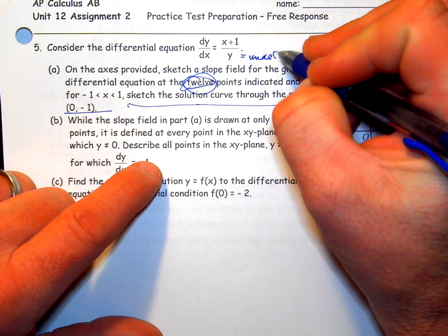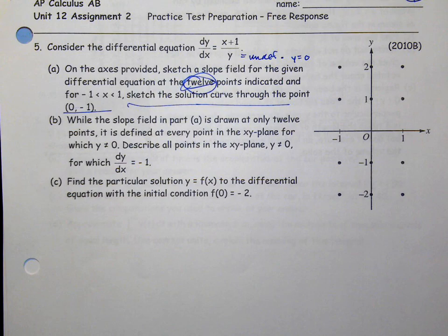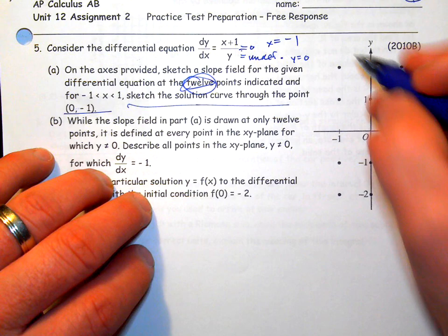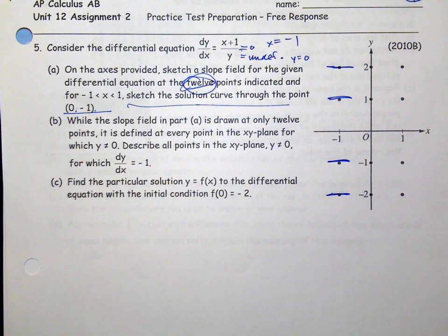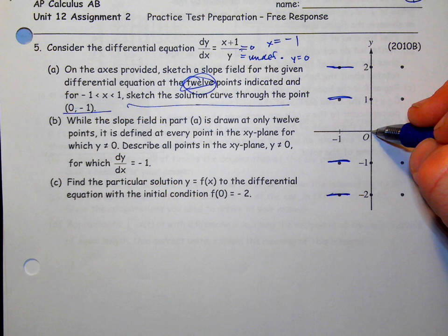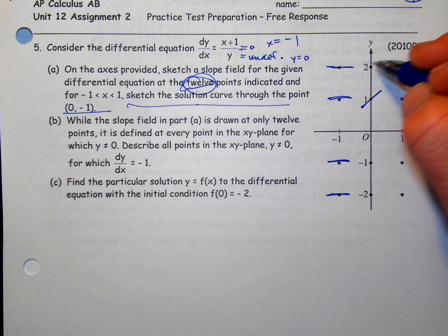When y equals zero, the slope is undefined, so we shouldn't technically draw a slope segment there because it doesn't exist. It equals zero when x equals negative one, so those get zero slopes — you just got third points there. If you plug in zero for x and one for y, you get one. For zero for x and two for y, you get one half.